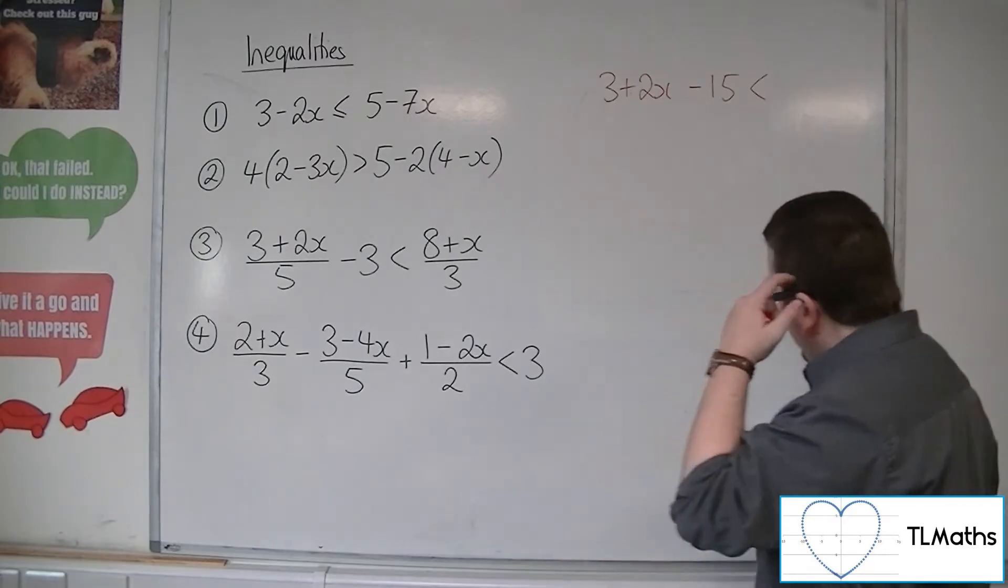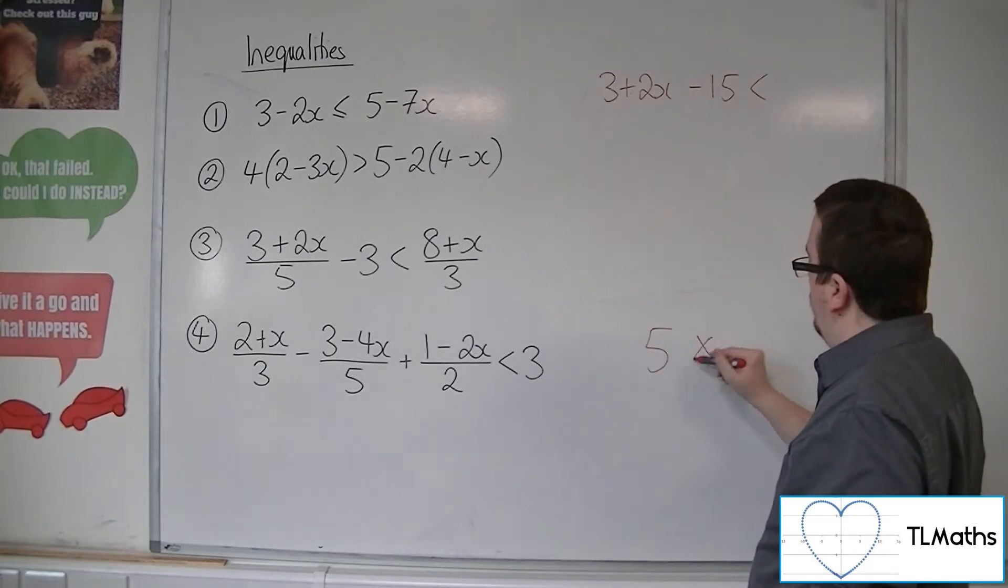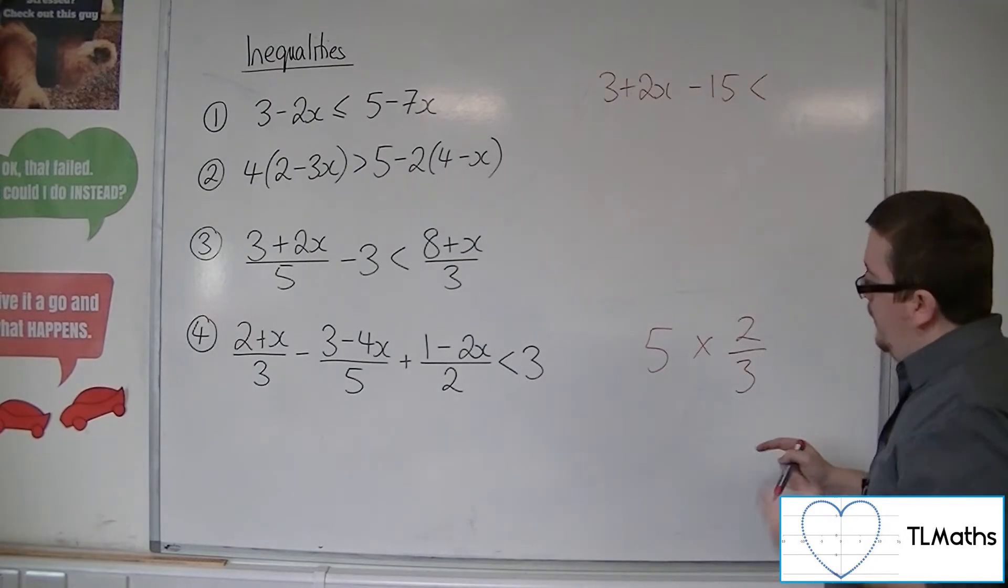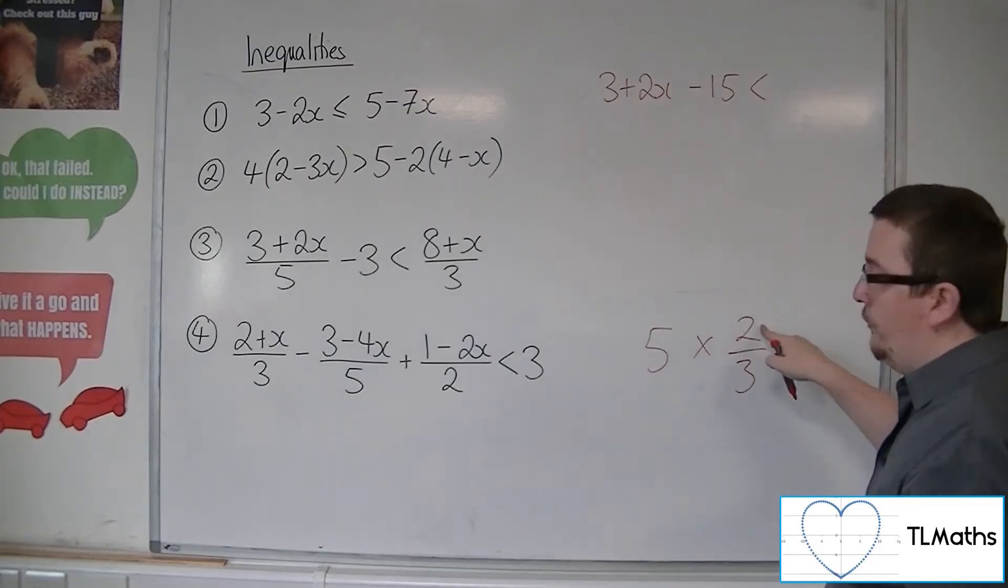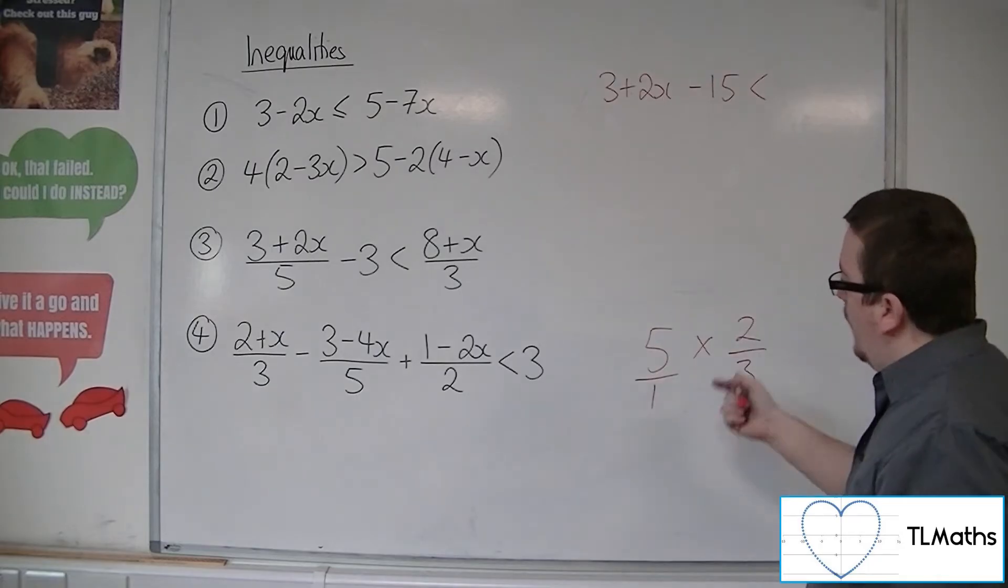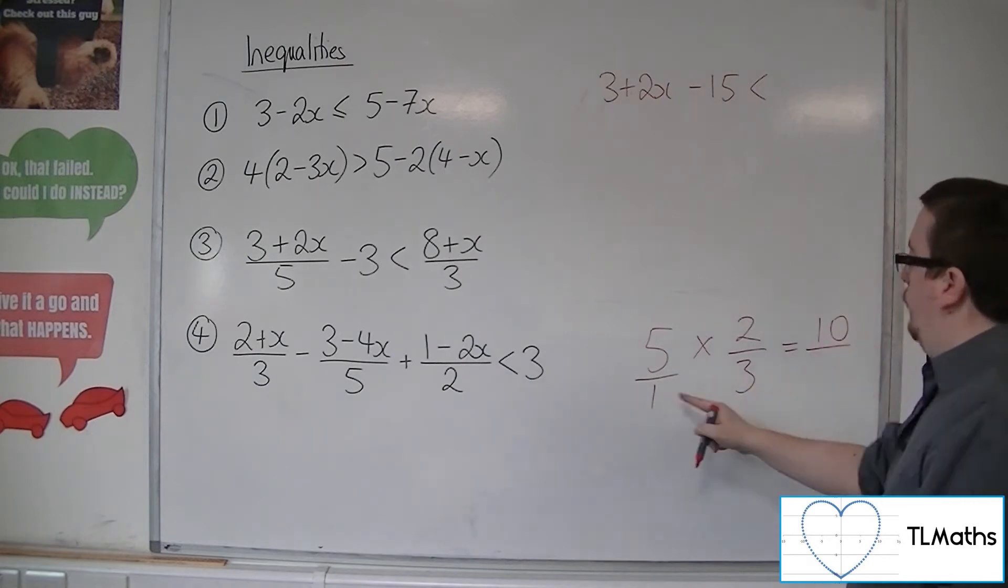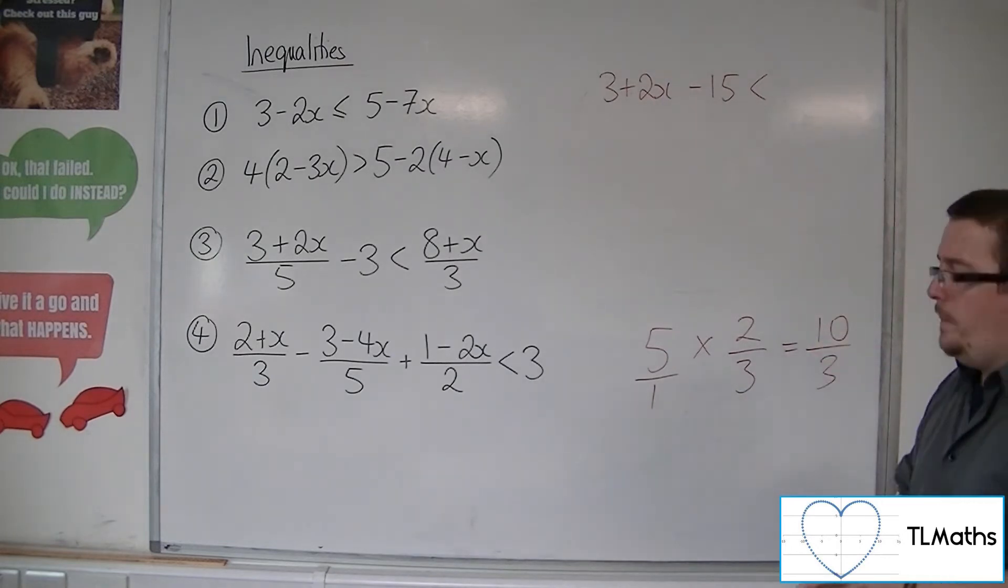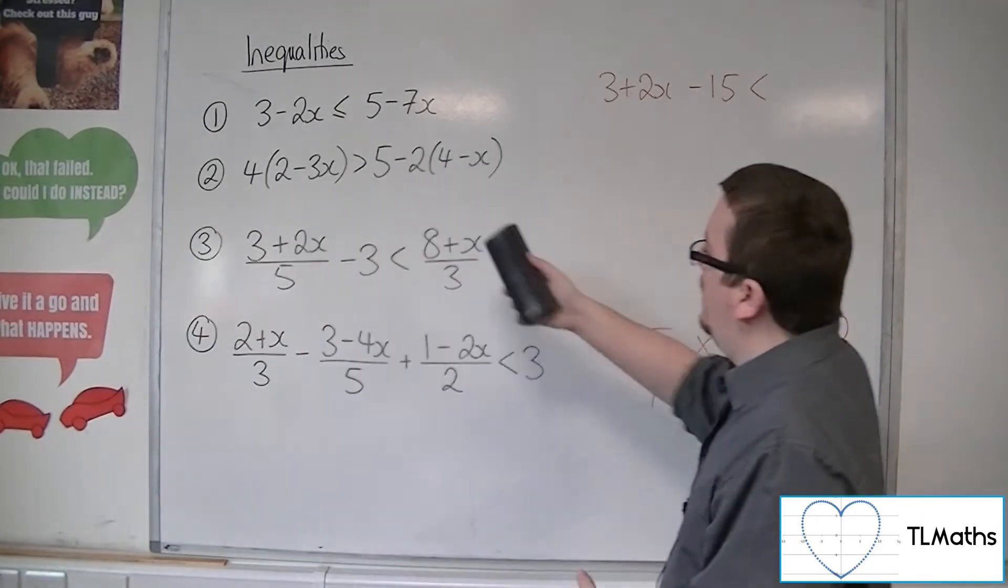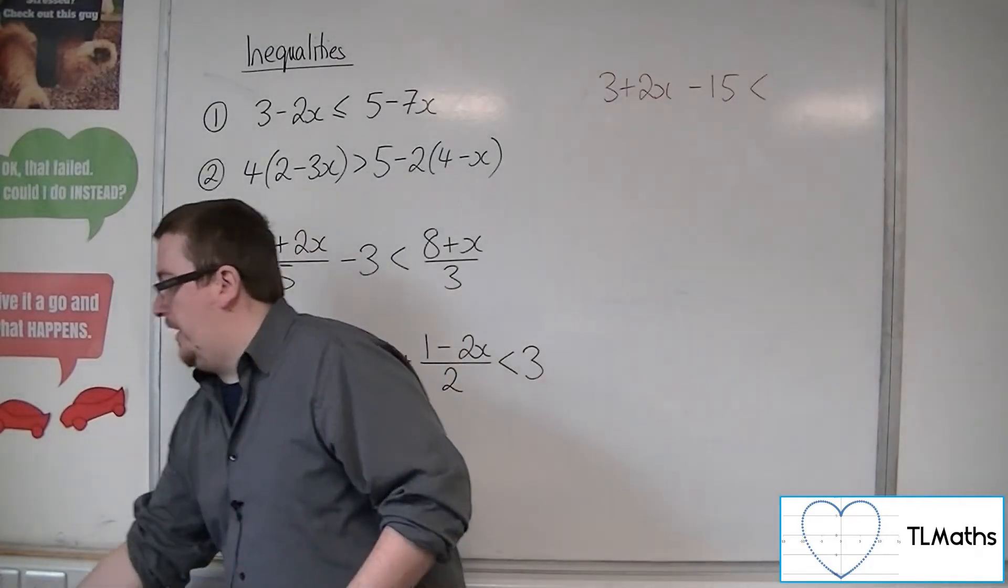Now remember, when you're multiplying whole numbers by fractions, so 5 times 2 thirds, for example, the 5 multiplies with the numerator only because 5 is 5 over 1. And when you multiply fractions, you multiply the numerators and then multiply the denominators. So I'm going to do exactly the same thing here. That 5 will only multiply with the 8 plus x. The 3 stays where it is.